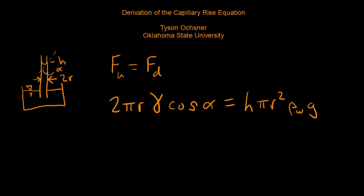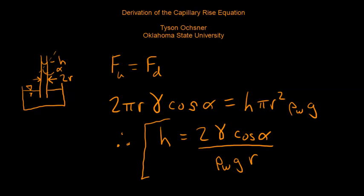If we just use some simple algebra and rearrange our equation, we can see that the height of capillary rise is given by two times gamma, the surface tension, times the cosine of alpha, which is our contact angle, divided by the density of water, acceleration due to gravity, and the radius of the capillary r. So now we have this expression of the capillary rise equation.